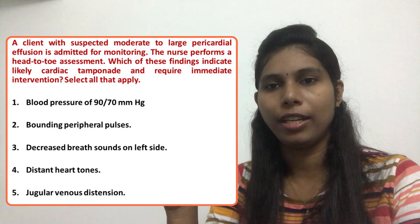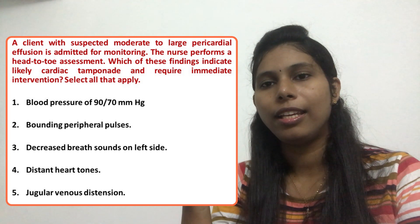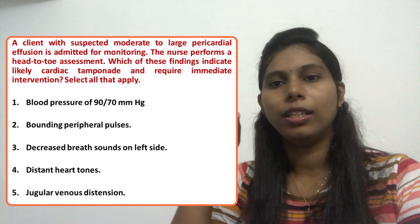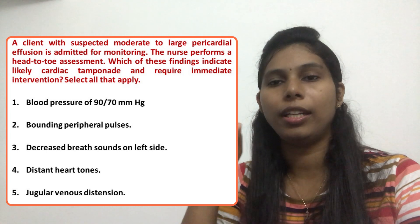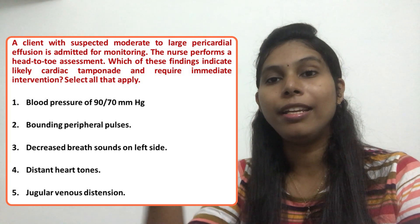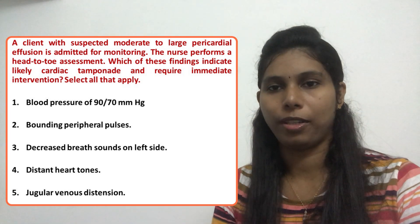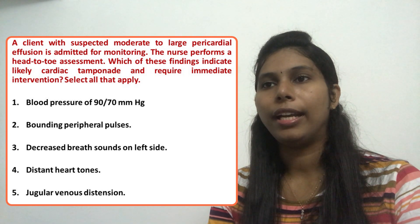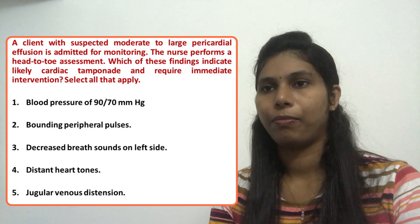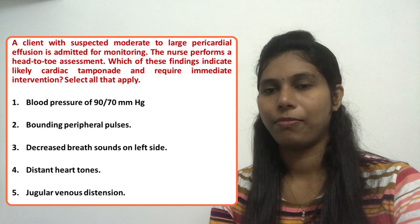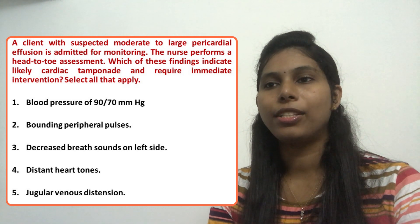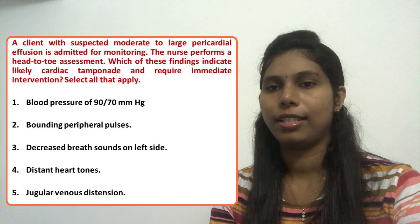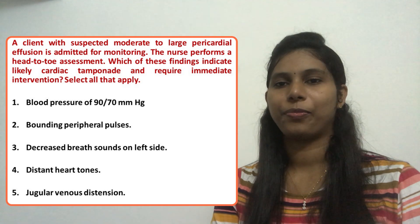Out of the options given, which symptoms indicate the client may have cardiac tamponade? Once we know the signs and symptoms, we can identify that the client requires immediate assessment and management. The options are: one — blood pressure of 90/70 mmHg; two — bounding peripheral pulses; three — decreased breath sounds on the left side; four — distant heart tones; five — jugular venous distension.